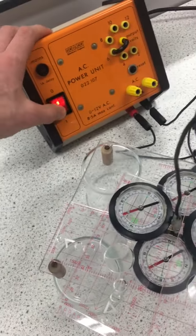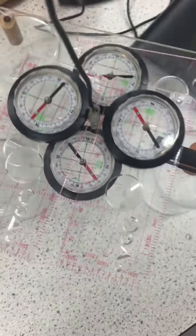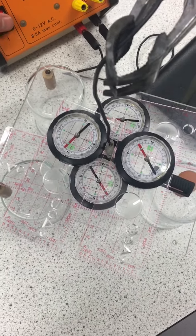So here we go, moment of truth, current on. And there we go. We can see the compasses are pointing around the wire.